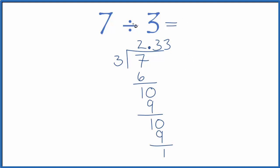So what we could do is we could write this as 7 divided by 3 equals 2.3 with a bar to show that 3 would just keep repeating on.